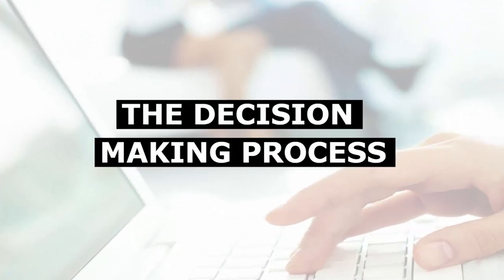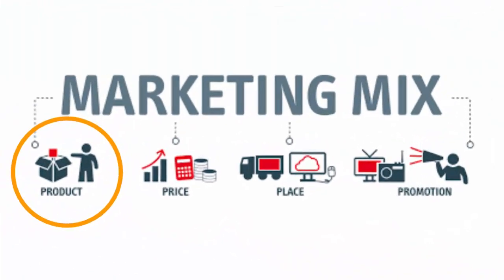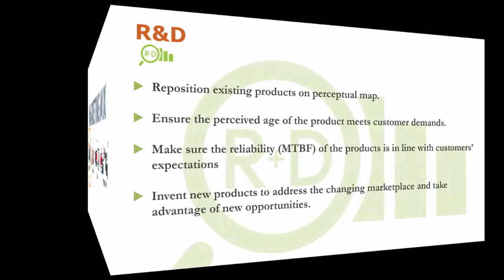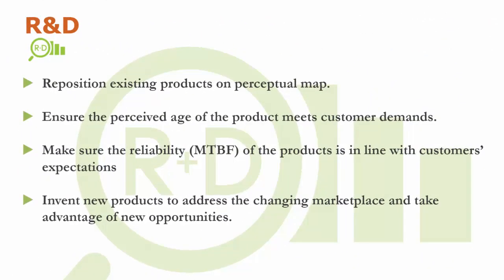Let's take a deeper dive into the decision-making process that you will be following while making decisions for your simulated company. The changes that you make in the R&D interface are related to the first P of the marketing mix: product. In R&D, you are going to focus on the positioning, age, and reliability of your current products, and you will also have the option to invent new products.